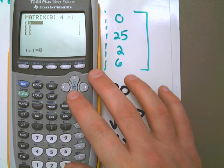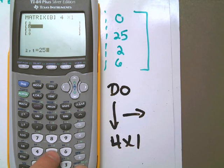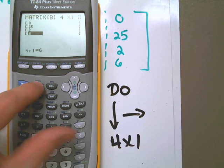Now I need to enter the values in for that, so I have zero, 25, two, and six. Second, quit, get out of it.